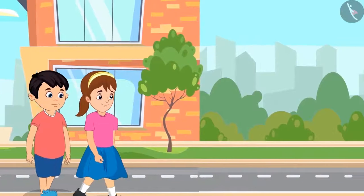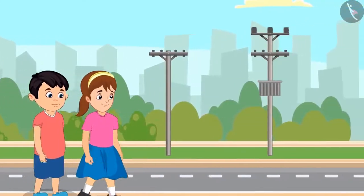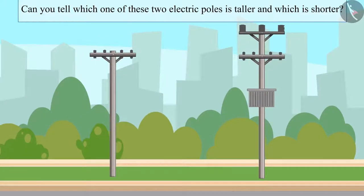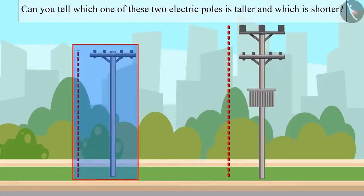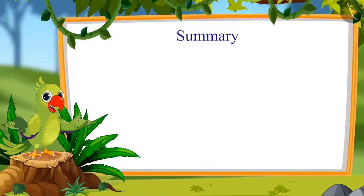After walking a little further, Chotu and Aarti saw two electric poles. These are the two poles. So children, can you tell me which one of these two electric poles is taller and which one is shorter? Yes, this pole is taller and this one is the shorter one.